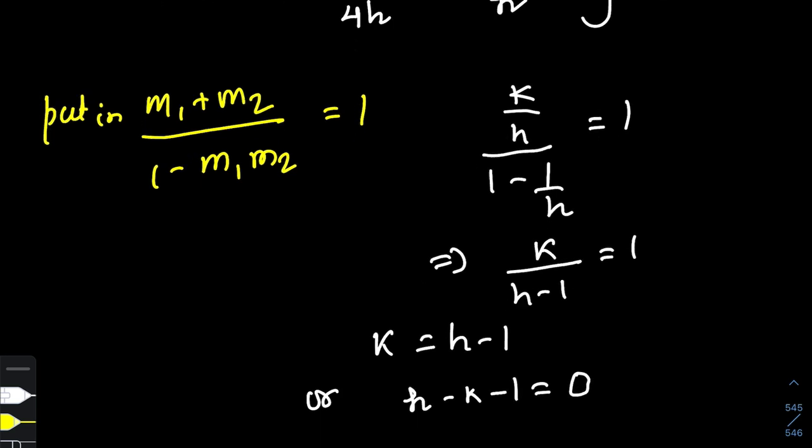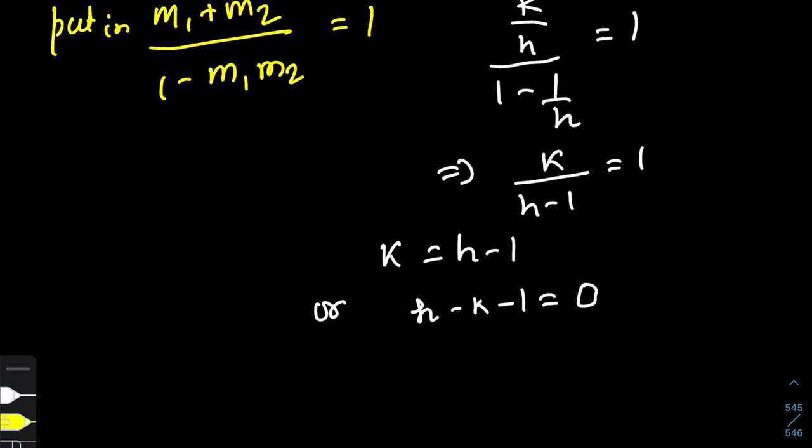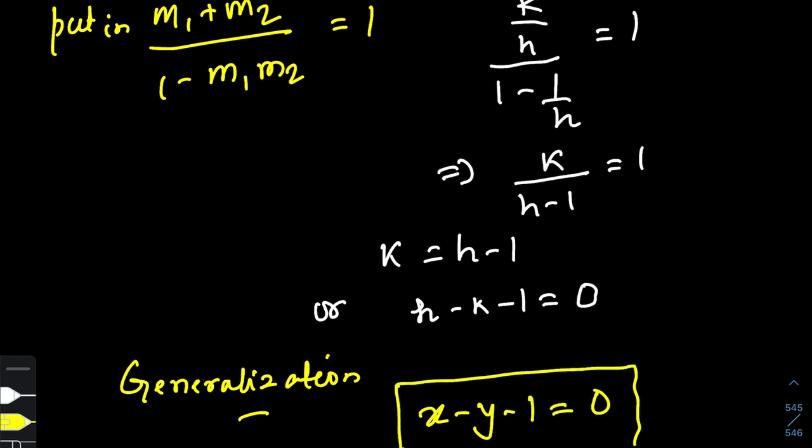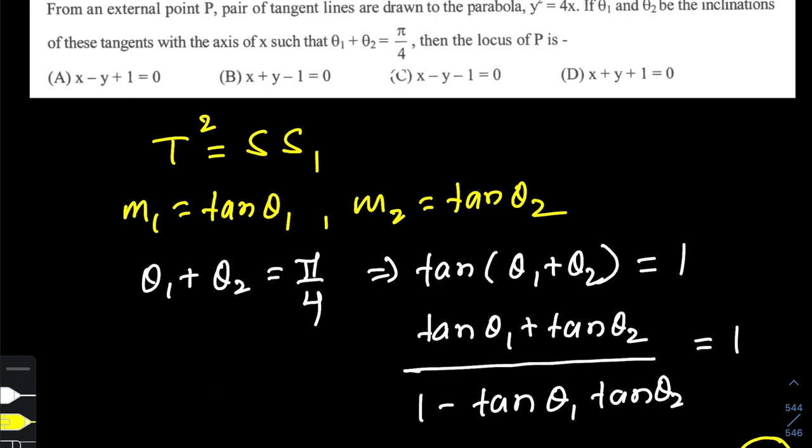Now time to generalize. On generalization, we end up getting the equation to be x - y - 1 = 0. This is the locus. Let us see which option matches with this. That's clearly option C.